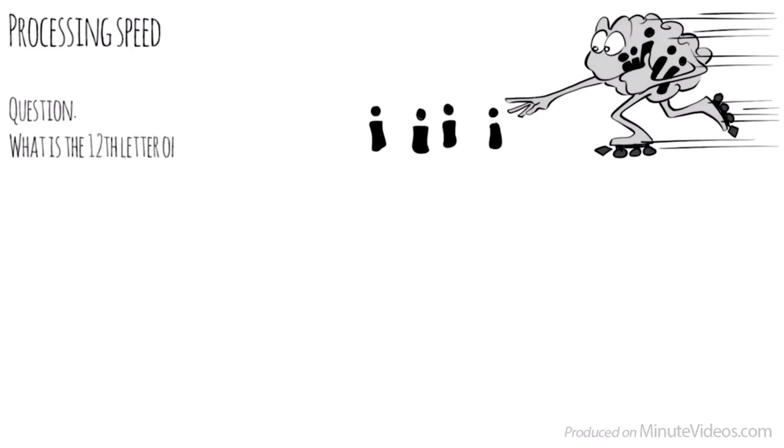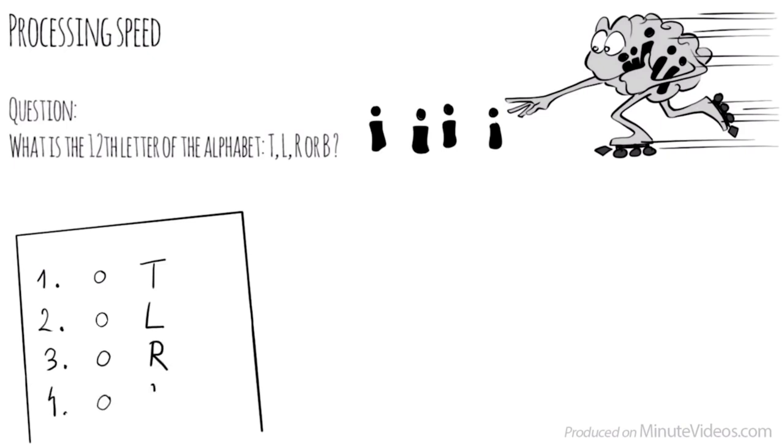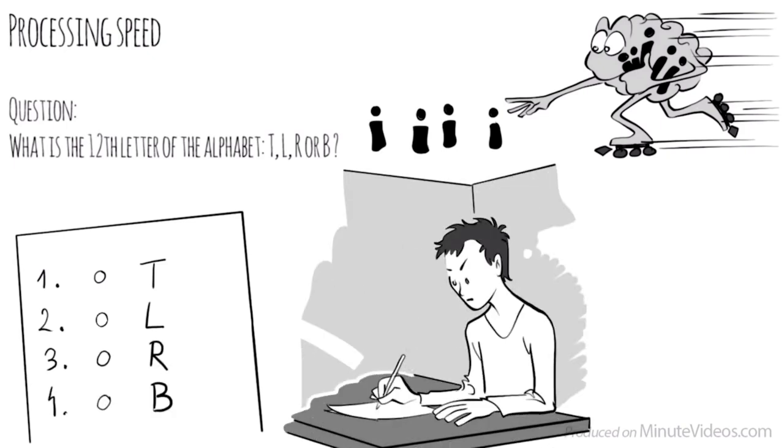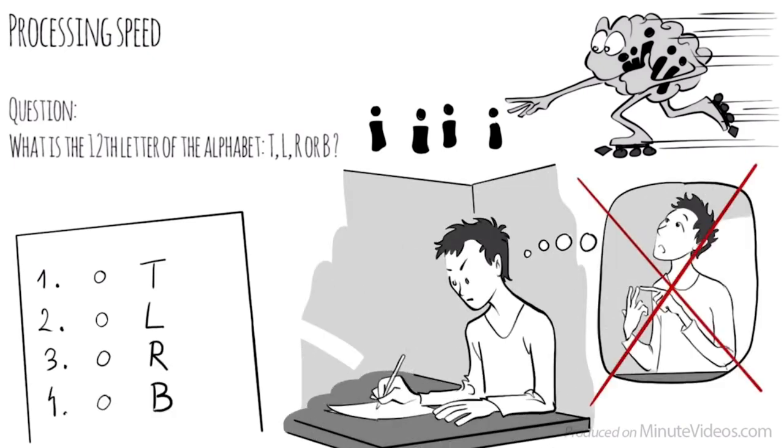The fourth section was about processing speed, the pace at which we take in new information and make sense of it in order to prepare a response. One of the questions asked was, what is the twelfth letter of the alphabet? Is it T, L, R, or B? I realized I had to rule out all the options that didn't look right. Counting would have taken way too long. L is the right answer.